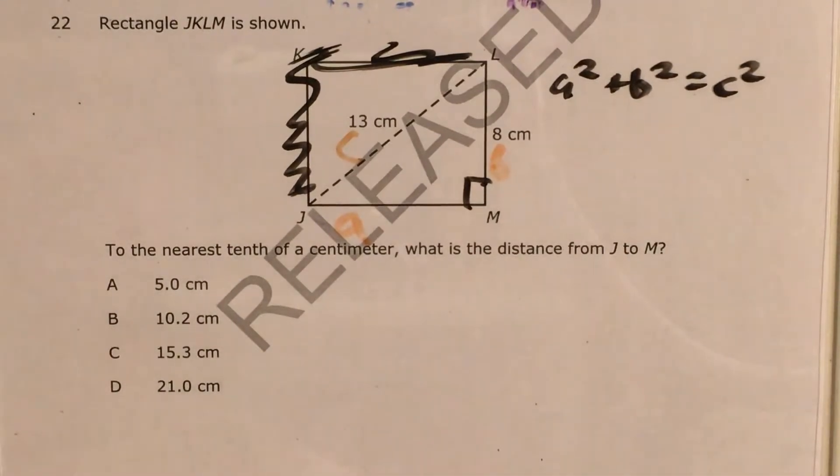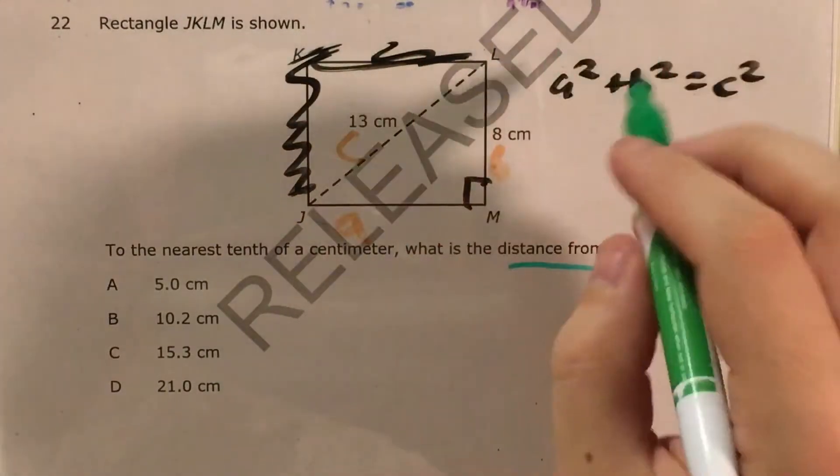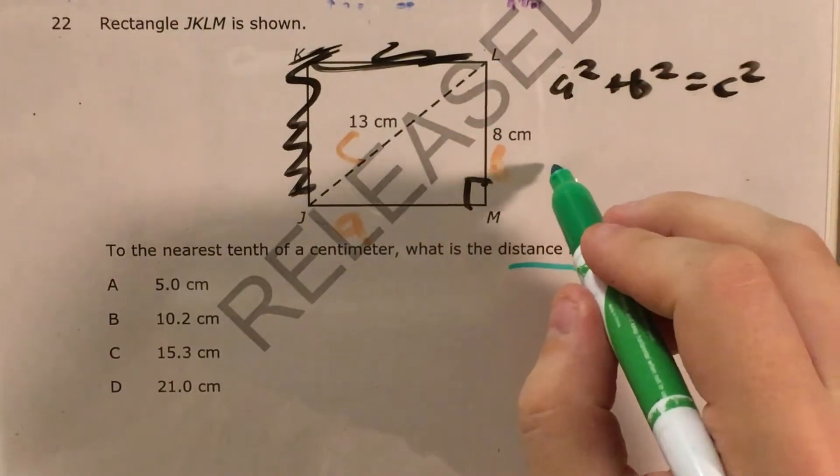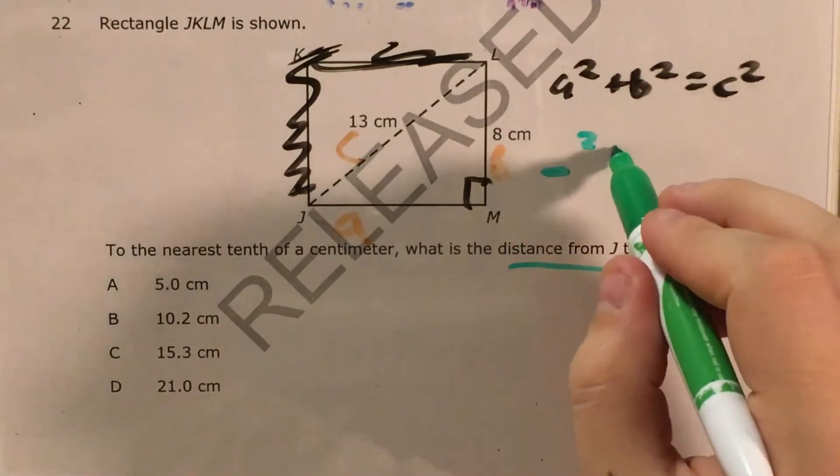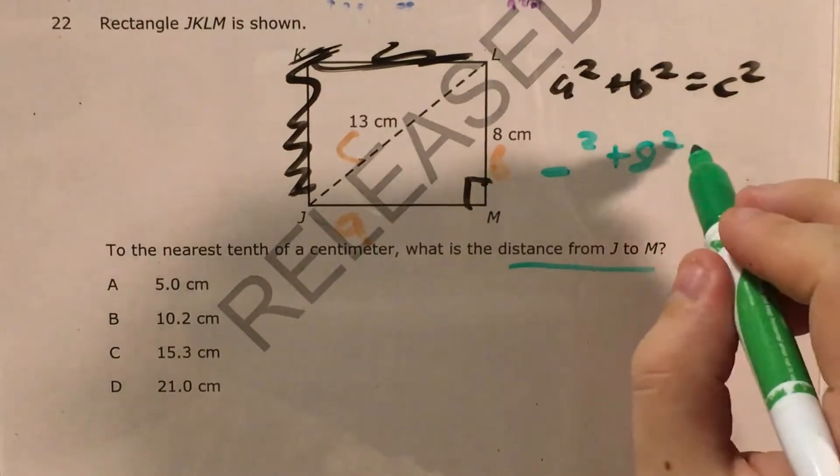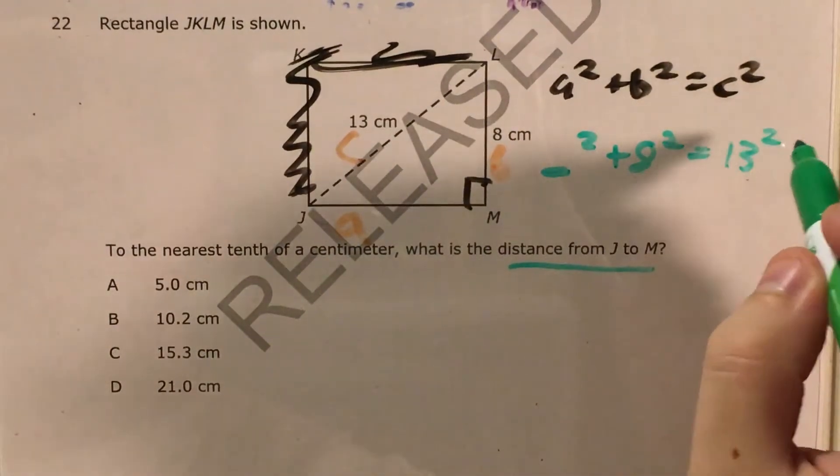And at this point, I'm going to go ahead and plug in some of the numbers that I know. A, this side down here, the distance from J to M is actually what we're trying to find. So that one I don't know. But I know that this number squared plus, and B was 8, so 8 squared equals C is 13, so that's 13 squared.